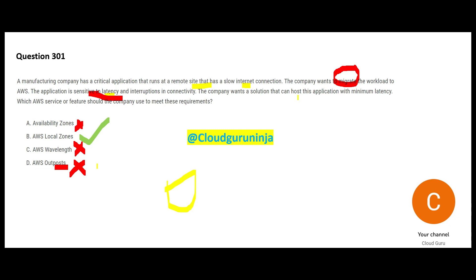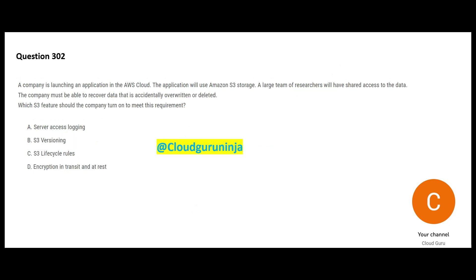You have accidentally deleted something. You have to restore it. So what property or feature of S3 will allow you? S3 Versioning will maintain each version. The moment you accidentally delete, you can recover it. Server Access Logging would be my answer to consider, but actually versioning is the right one. Server Access Logging will provide you detailed records of requests that are made to a bucket. These are logs, and they are very useful for applications.